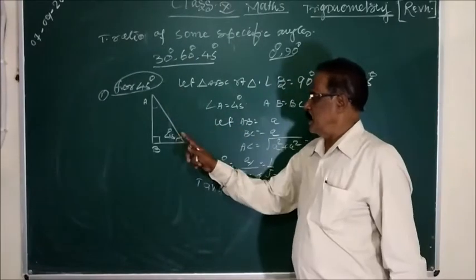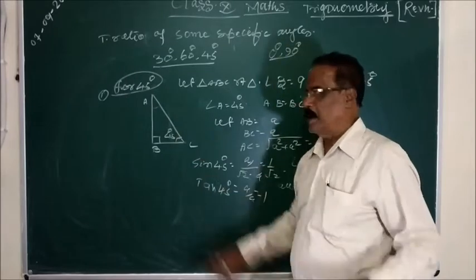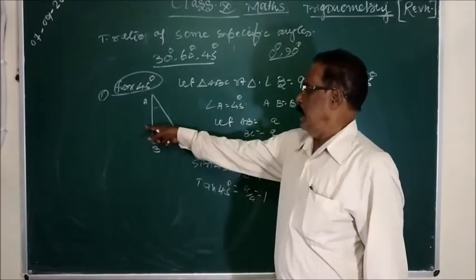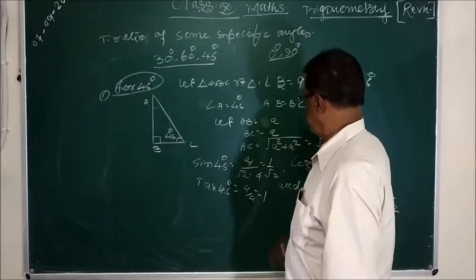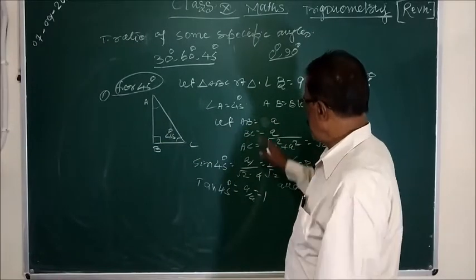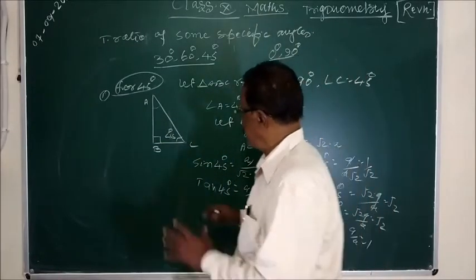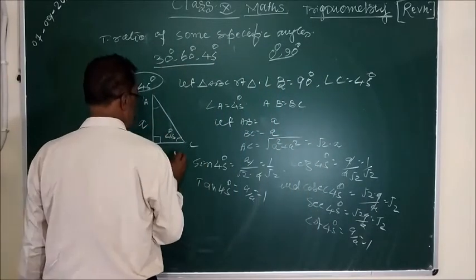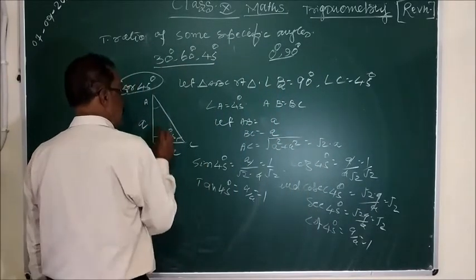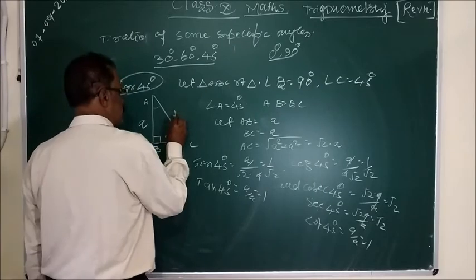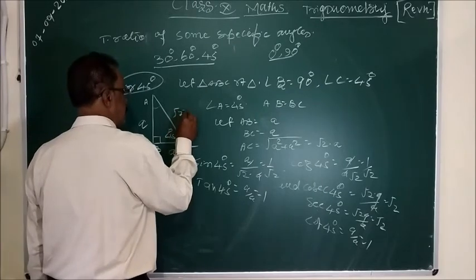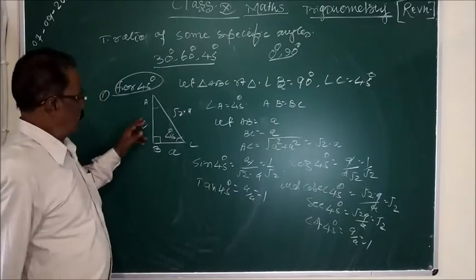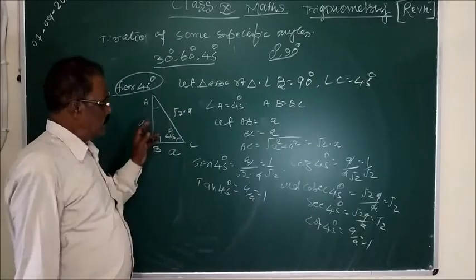And if two angles are equal, the sides opposite to them are equal. Therefore, AD is equal to BC. Now suppose side AD is A. This will be A, and this will also be A. By using the Pythagoras theorem, the hypotenuse will be under root 2 times A. Now we know all three sides.